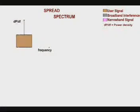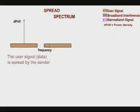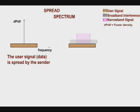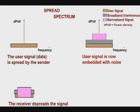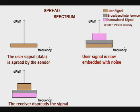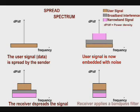Let us see what is actually happening. The narrowband signal is spread and sent through air. Broadband and narrowband interference add up to the signal. The receiver knows how to de-spread the signal and reconstructs it since the power level of the user signal is high enough.